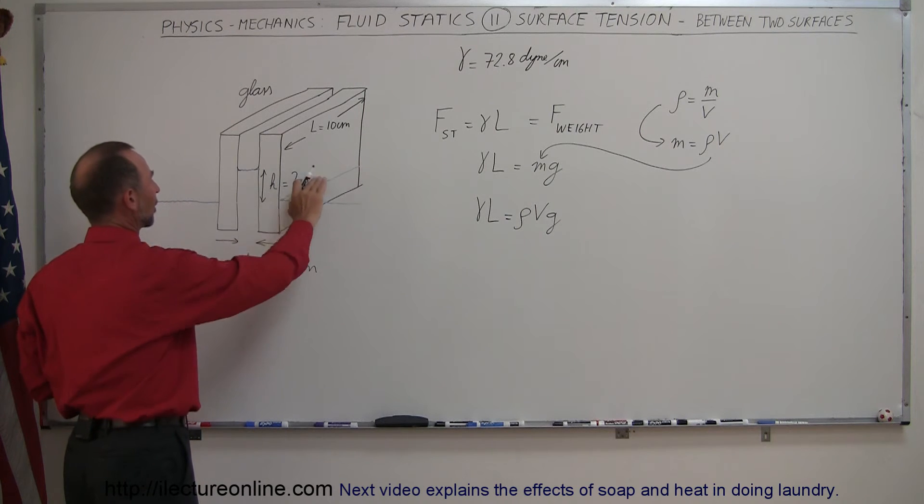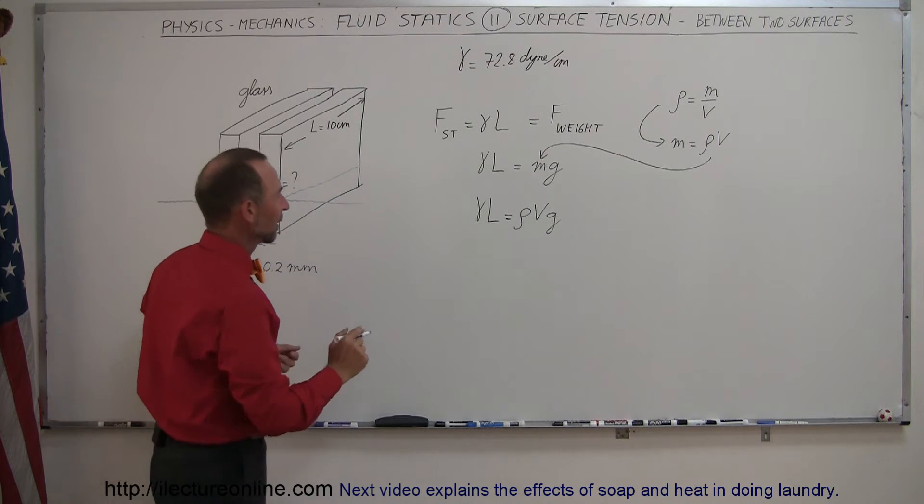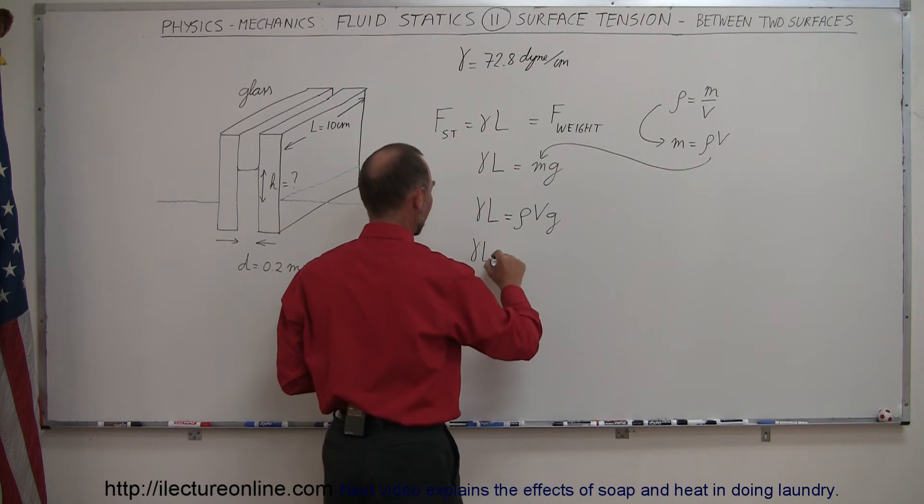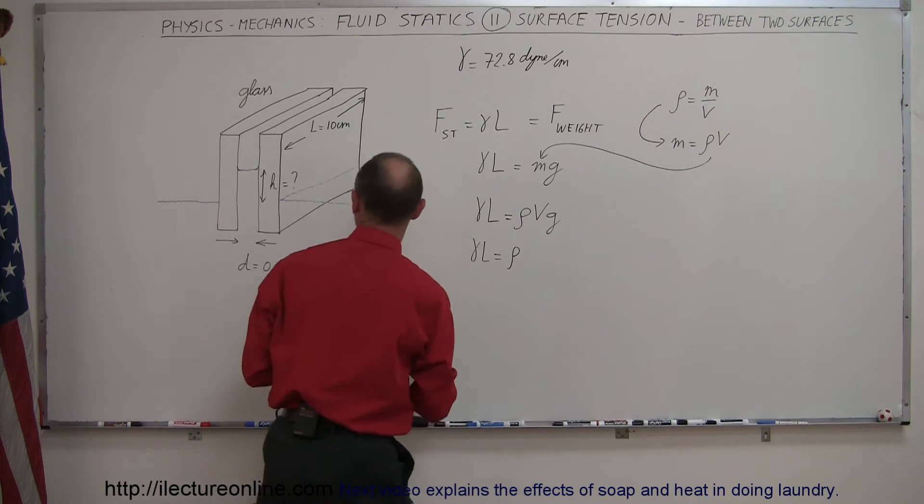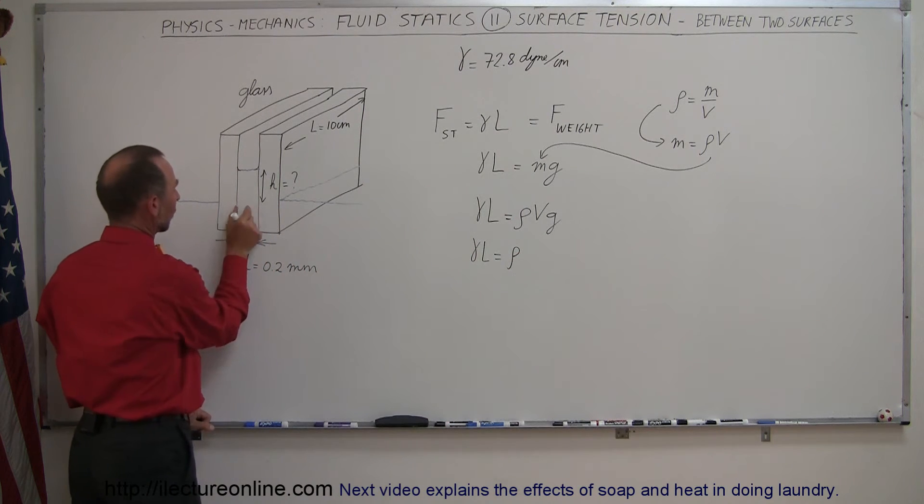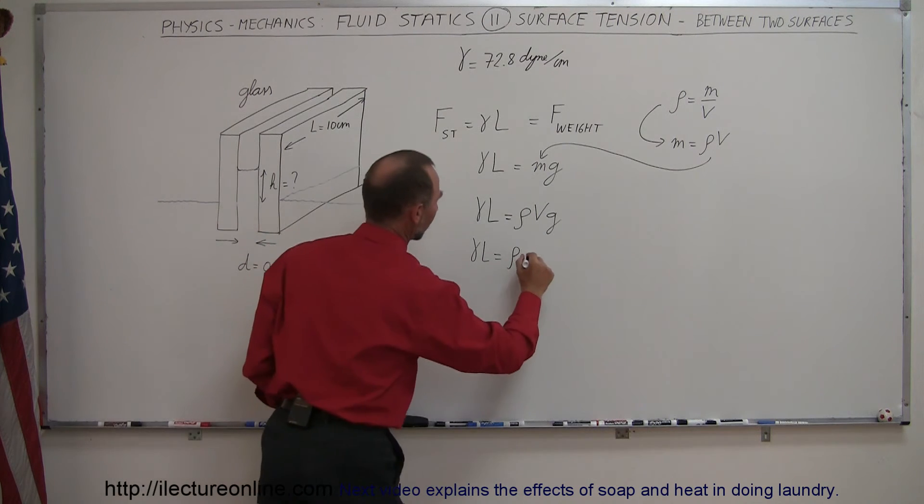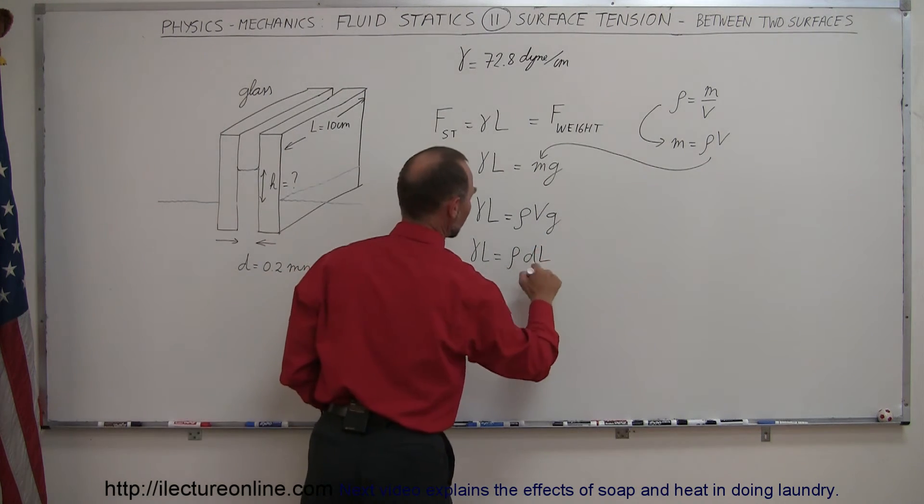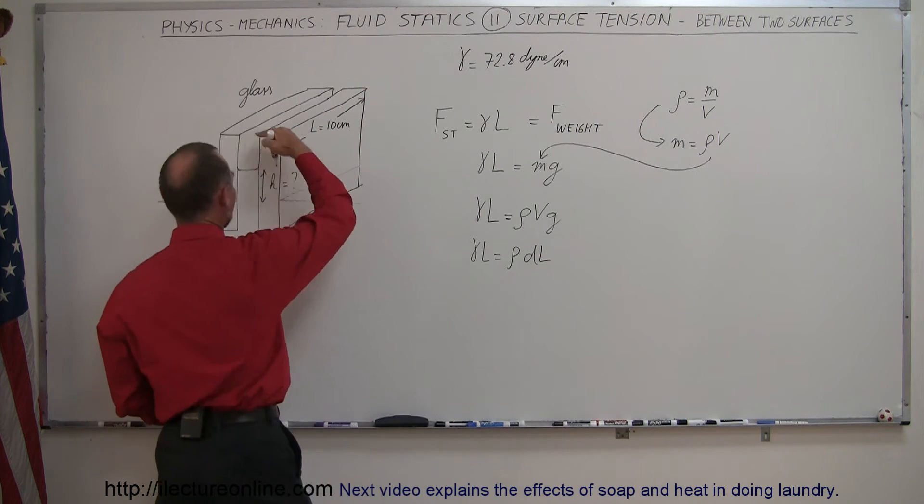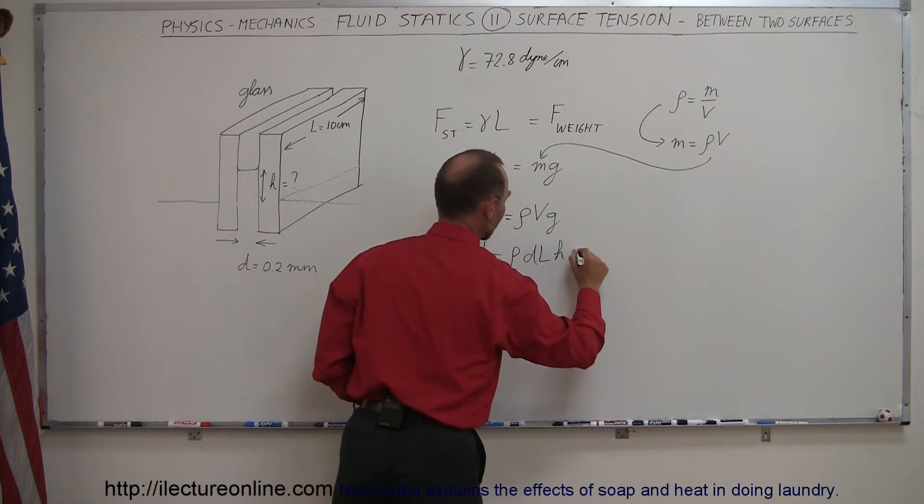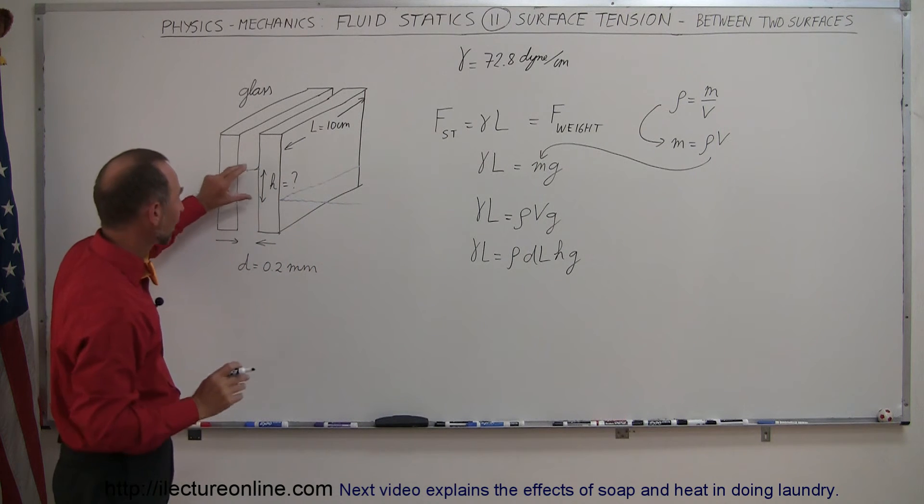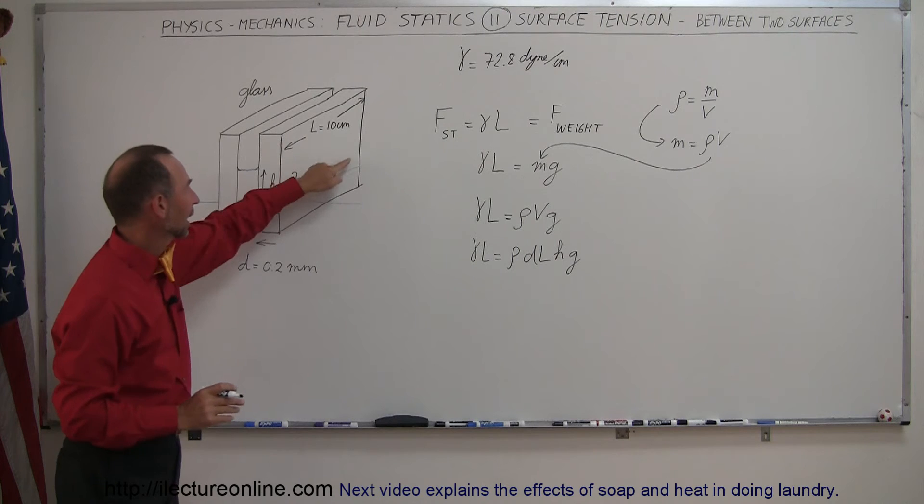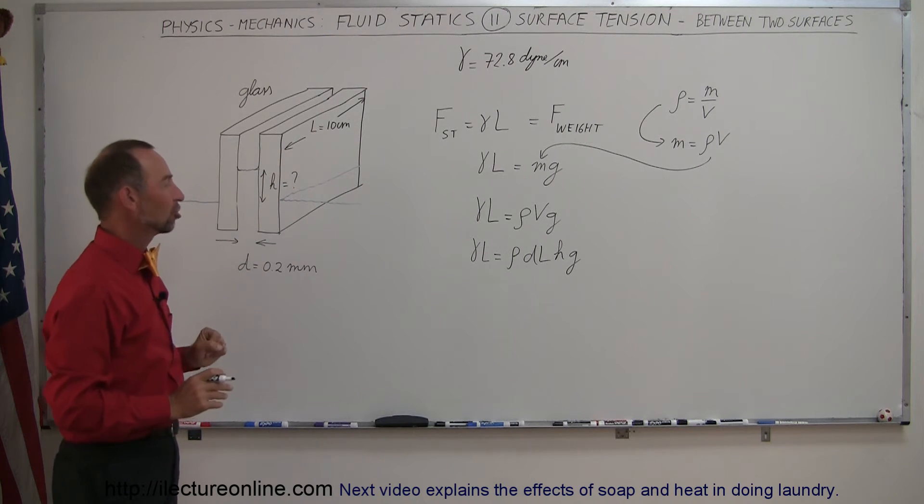It would be the cross-sectional area of the base times the height. So γ times l equals the density times volume times g. The volume would be the width, which is the distance d, times the length l (that's the area), times the height h—that gives us the volume. So the volume of water pulled up is d times l times h.